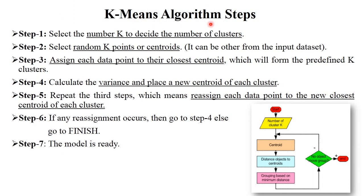The next point is K-means algorithm steps. I will explain this algorithm with an example. The first step is to select the number of K — decide the number of clusters. Second, select random K points or centroids. If there are two clusters, K equals two, so you select two centroids. Third, assign each data point to its closest centroid — check remaining data points and identify whether each moves to cluster K1 or K2. Then, after a data point is added to a cluster, update the centroid of that cluster. Repeat this step, and at the last your model is ready.